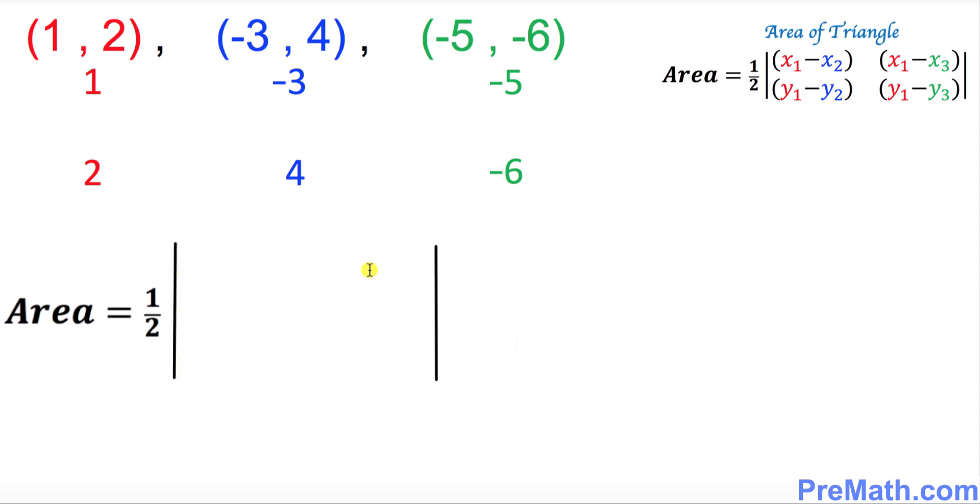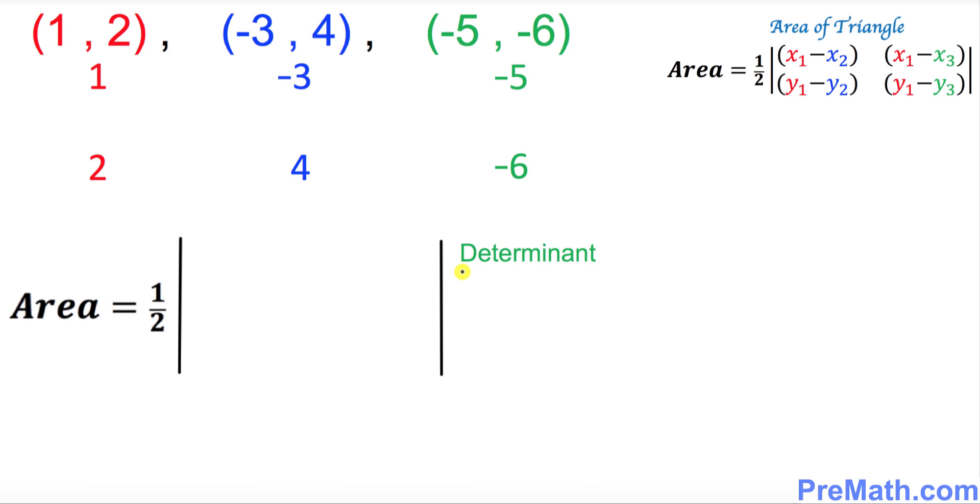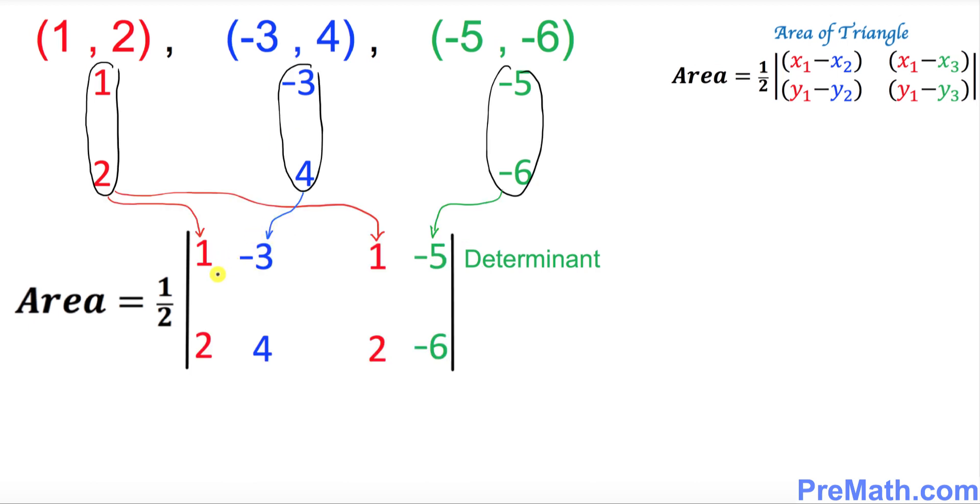...is called a determinant. So once again, this box is called a determinant. Now what we're gonna do is we're gonna fill out this box of determinant by putting these entries. And here I filled out this determinant and you can see these red numbers showed up twice over here in two columns, and this blue showed up just once, and the green one showed up once as well.